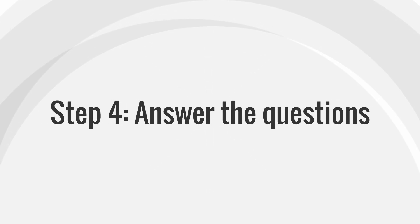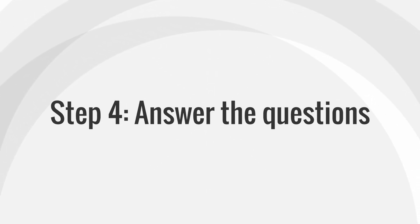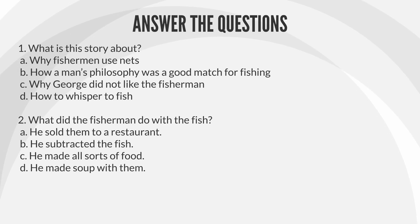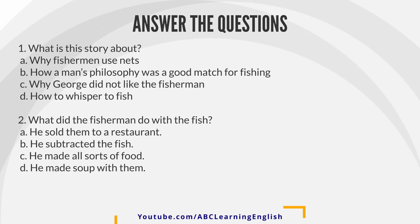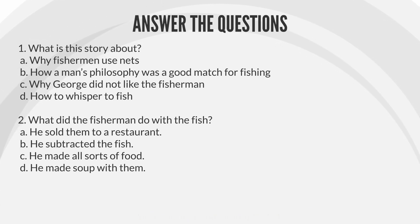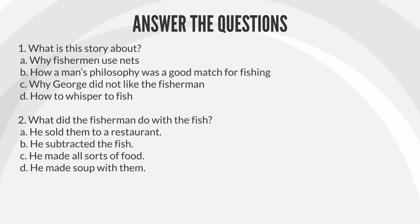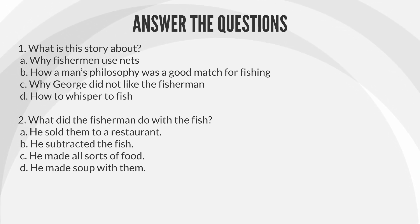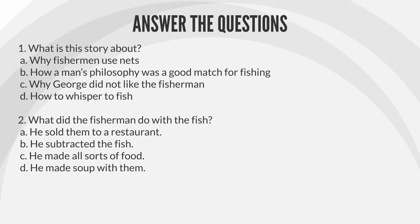Step 4: Answer the questions. Question 1: What is this story about? A. Why fishermen use nets. B. How a man's philosophy was a good match for fishing. C. Why George did not like the fisherman. D. How to whisper to fish.